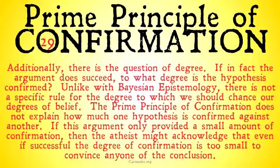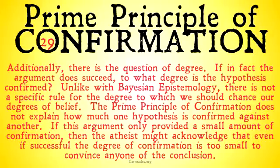Additionally, there seems to be a big question of degree — a problem we were poking at in the last example. If the argument does succeed, to what degree is the hypothesis confirmed? Unlike with Bayesian epistemology, there's not a specific rule for the degree to which we should change our degrees of belief. The prime principle of confirmation does not explain how much one hypothesis is confirmed against another. If this argument only provided a small or infinitesimal amount of confirmation, then the atheist might acknowledge that even if successful, the degree of confirmation is too small to convince anyone that God exists. Until we give some degree to the prime principle of confirmation, there's no reason to believe that the hypothesis 'God exists' is confirmed in any way that would actually make us change our point of view.